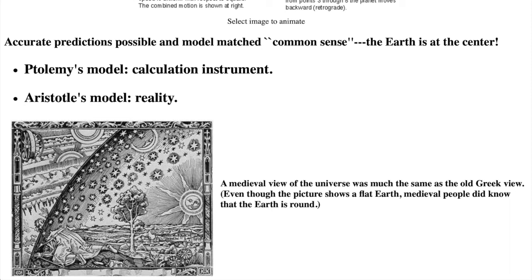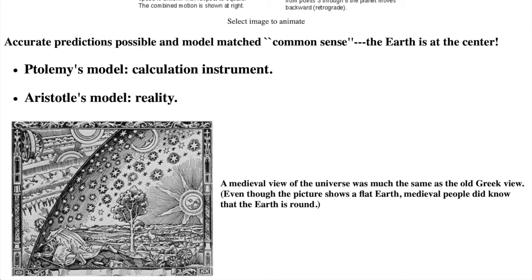As I said before, the model correctly predicted the positions and brightnesses of the planets. Ptolemy's model was incompatible with Aristotle's crystalline sphere model and the Pythagorean paradigm. A planet on an epicycle would crash into its crystalline sphere and the motion is not truly centered on the Earth. So Ptolemy adopted an instrumentalist view. This strange model is only an accurate calculator to predict the planet's motions, but the reality is Aristotle's model.